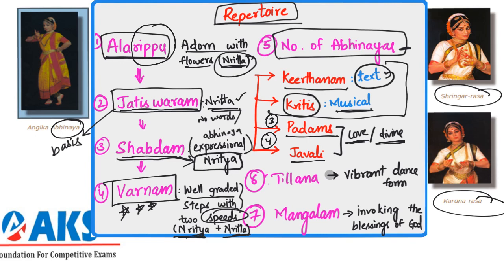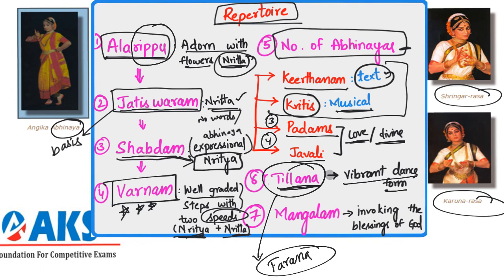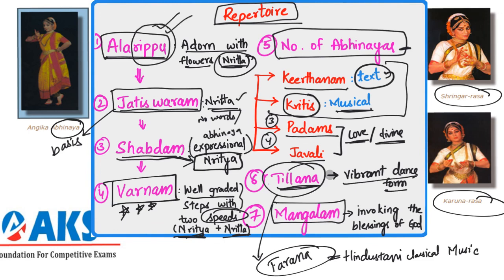The sixth part of the Bharatanatyam repertoire is Tilana, which has its origin in the Tarana of Hindustani classical music. As the performance reaches its end, you can see a vibrant dance form with a series of well-graded rhythmic lines reaching a climax. The performance then concludes with Mangalam — invoking the blessings of the gods. So the performance starts with adorning flowers in Alaripuvu and ends with Mangalam.